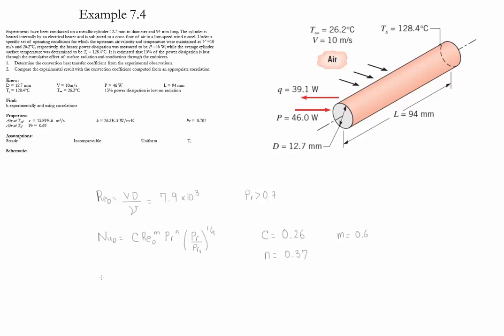If we substitute the information that we have into the Nusselt number equation, we find that the Nusselt number, this is an average value, is equal to 50.5.